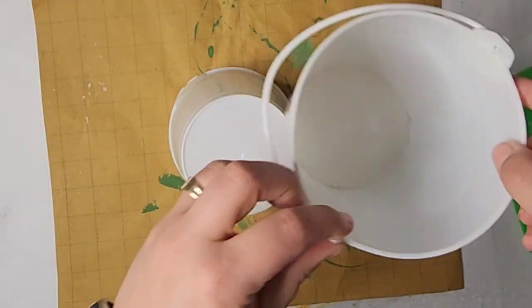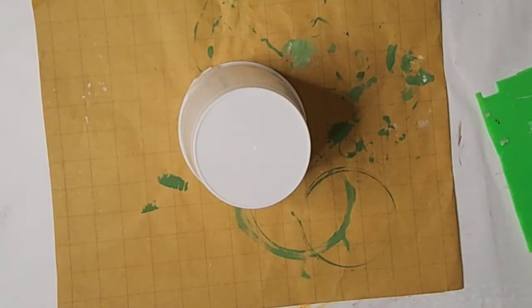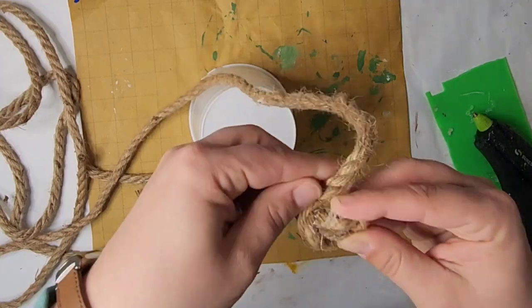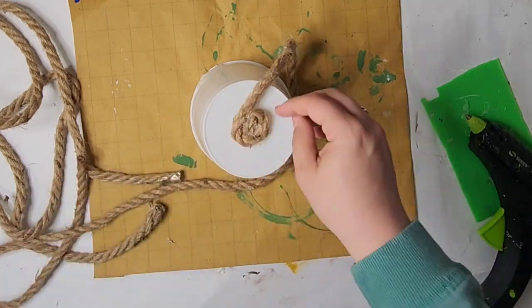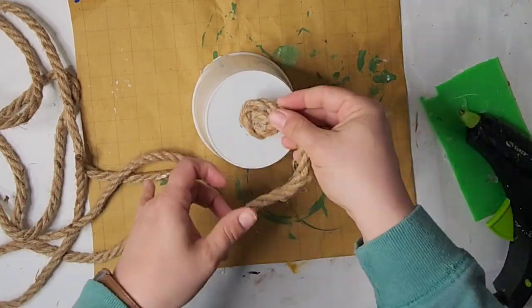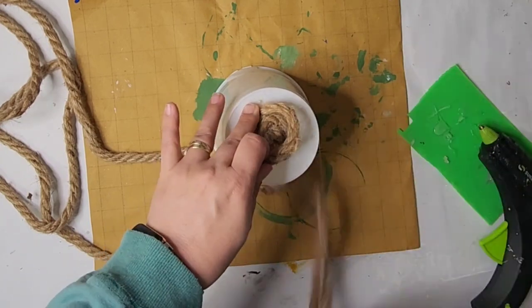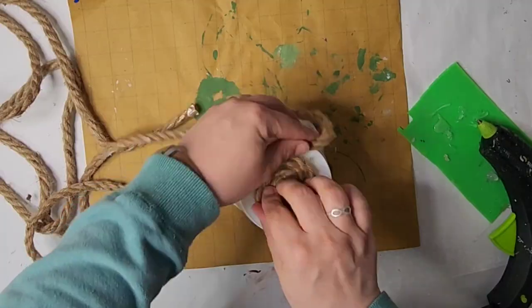For this DIY, I'm taking this Dollar Tree bucket. It came in a pack of three. I cut off the handles and the part that was raised up that was holding the handle. Taking some Dollar Tree rope, gluing it in on itself to make a coil. I am going to make a beehive. I'm just hot gluing these coils.